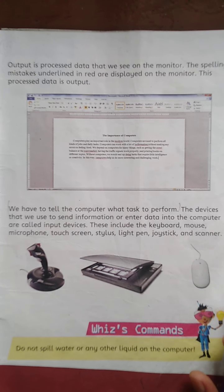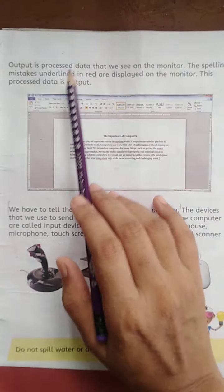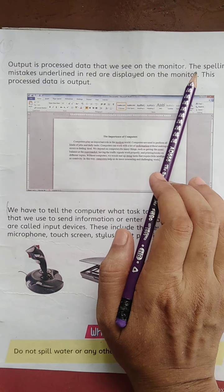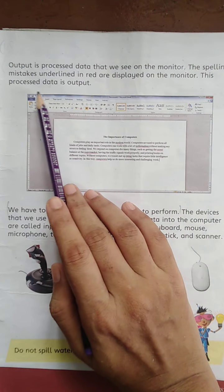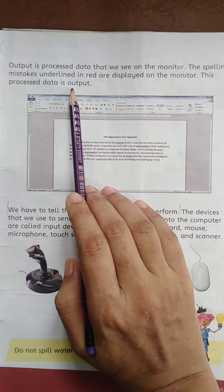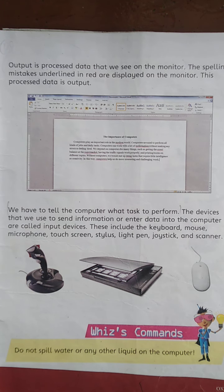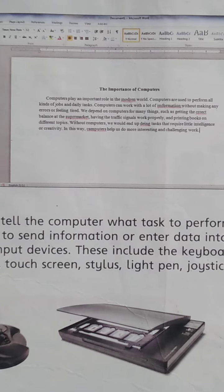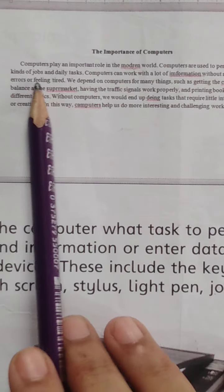Let's start book page number 19. Output is processed data that we see on the monitor. The spelling mistakes underlined in red are displayed on the monitor — this processed data is output. Whatever you enter through the keyboard is input, and what is shown on the screen is the processed data, which is output.